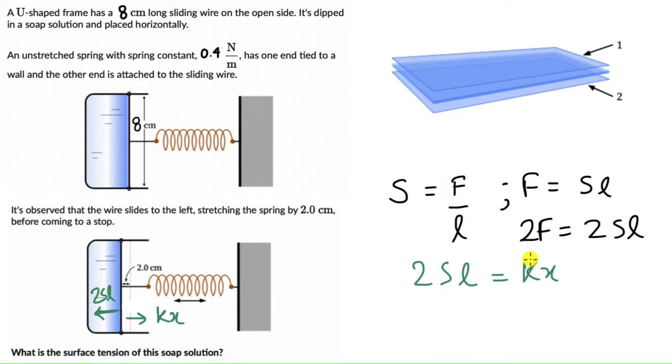We can now figure out S, because we know K, we know X, and we know L, the length of the sliding wire. So let's do that.